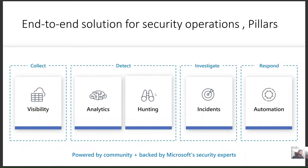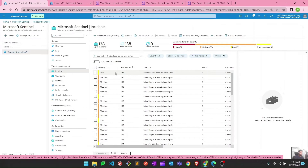We have now arrived at the third pillar which is investigate, and under investigate we have incidents. Let's quickly go and check how we can investigate our incidents, what is the step by step process, how we should deal with all those incidents which are continuously happening to our environment. Here on the Sentinel portal we can see there are incidents available based on the data connectors we connected and the analytic rules we created.